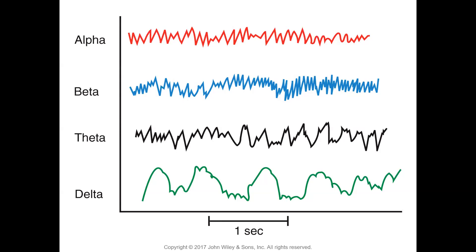EEGs are used clinically for diagnosing epilepsy, coma, brain death, dementia, and numerous brain diseases. They are also commonly used in sleep studies for patients with insomnia, hypersomnia, and night terrors. EEGs can monitor brain activity during general anesthesia and help diagnose and distinguish different kinds of dementia or track the rate of progression.